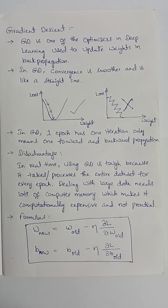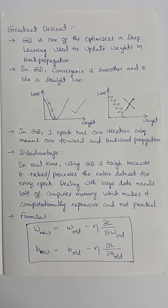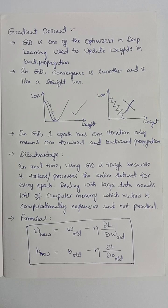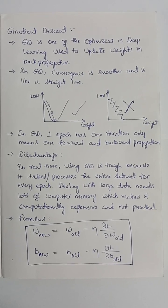convergence is smoother and is like a straight line. Here, one epoch has one iteration only. Disadvantages of gradient descent: In real time,